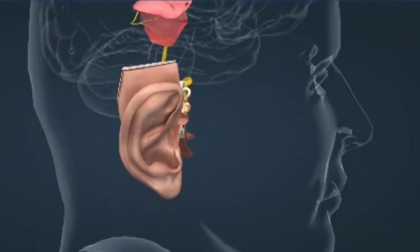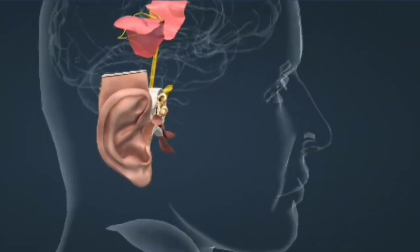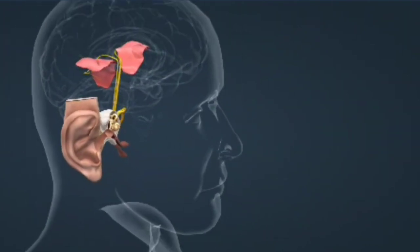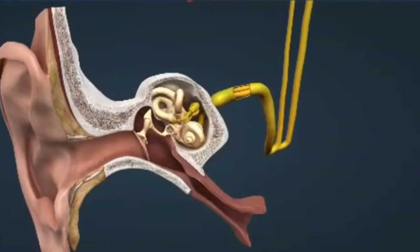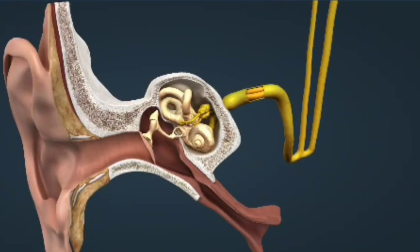The auditory cortex is a brain region located in the temporal lobe of the brain, just behind the ear. This part of the brain interprets signals from the cochlea, sending them along to other parts of the brain that are responsible for processing sound.